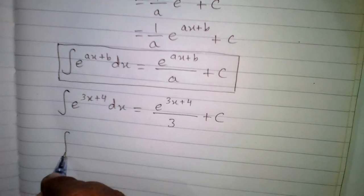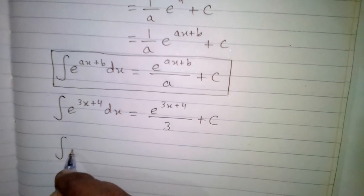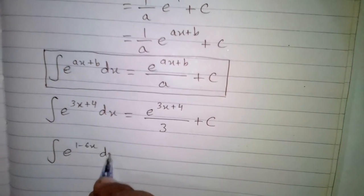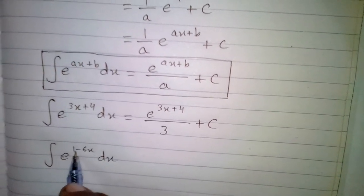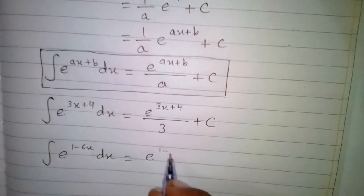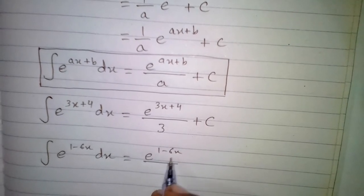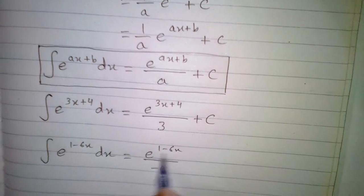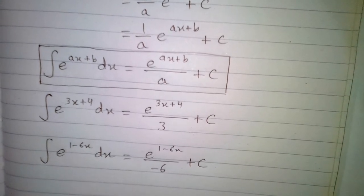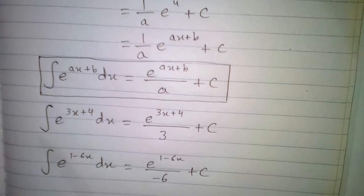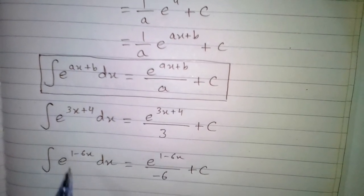Another example of this formula: the integral of e to the power 1 minus 6x with respect to x is e to the power 1 minus 6x upon the coefficient of x, which is minus 6, or the derivative of 1 minus 6x, which is also minus 6, plus c. So here are two examples of this formula and we can directly use it on these types of integrals.